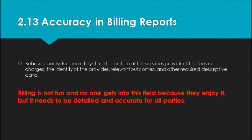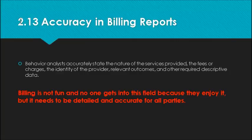2.13 covers accuracy in billing and reports. You must accurately state the nature of services, fees and charges, the provider, outcomes, and other descriptive data — what you're doing, how much you're doing it, and what the data shows. Billing is not fun and I don't know anyone who gets into ABA or education for that reason, but you are ethically obligated to deal with the billing part in a comprehensive fashion.